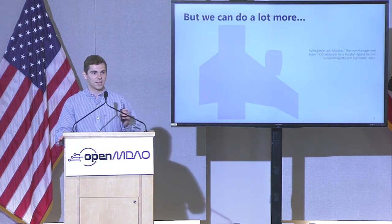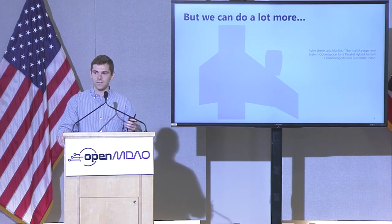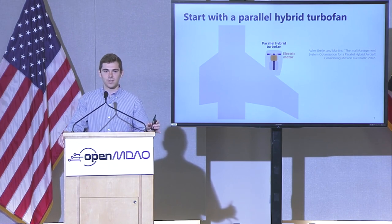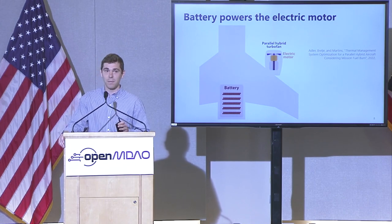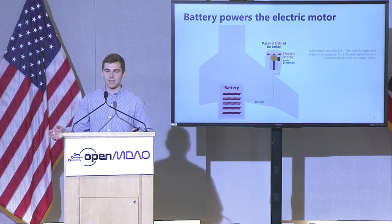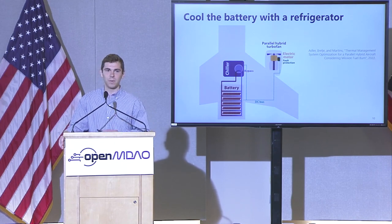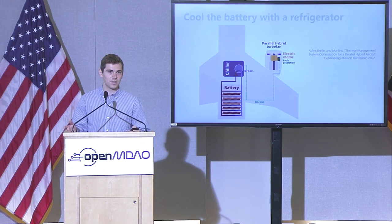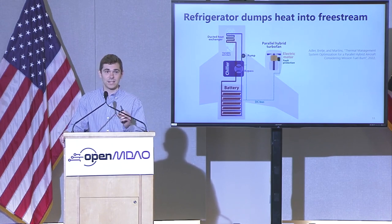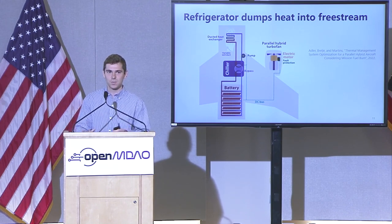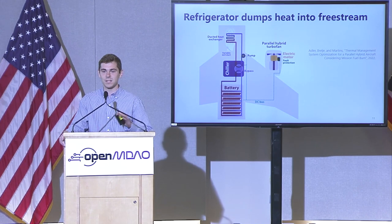This is kind of a kitchen sink of all the thermal components we have — actually a project for Roger Dyson here at NASA. We start off with a parallel hybrid turbofan model, an offline surrogate model of PyCycle, and then use our electric motor from OpenConcept. We power that electric motor with a battery connected via a DC bus. The battery produces heat that needs to be cooled using a refrigerator — electric active cooling — with a liquid coolant loop. That refrigerator dumps heat to the free stream via a ducted heat exchanger. We're getting down to the level of sizing the pump, sizing the diameter of the tubes, accounting for how coolant pipe diameter affects tube weight and pressure drop through the coolant loop — those become design variables.